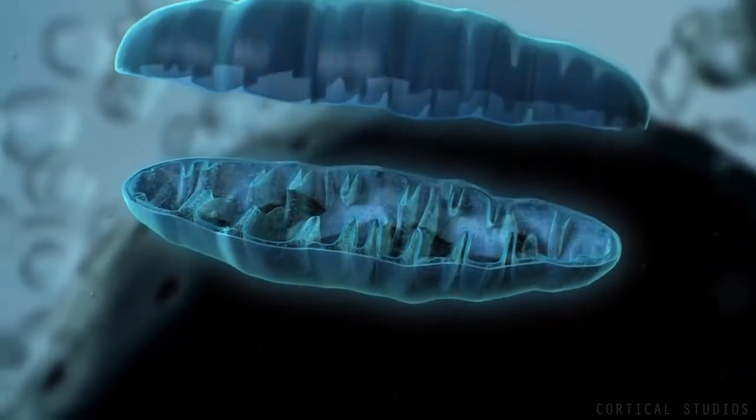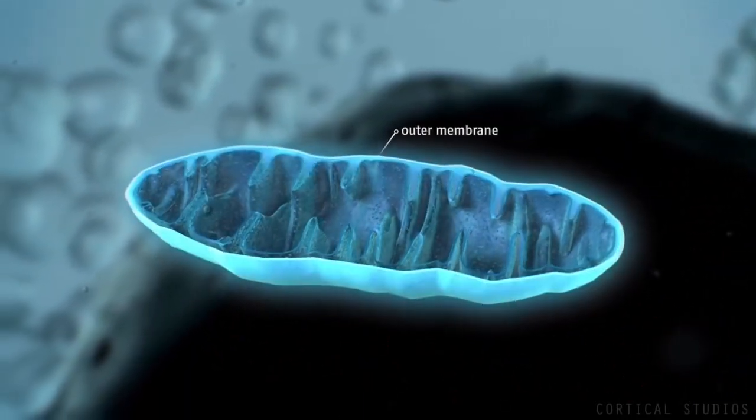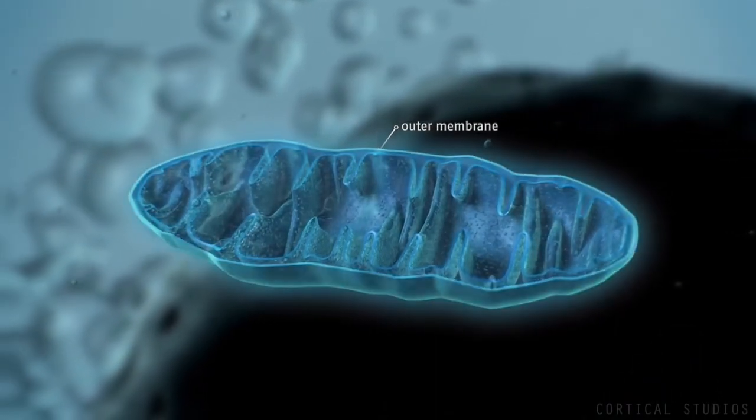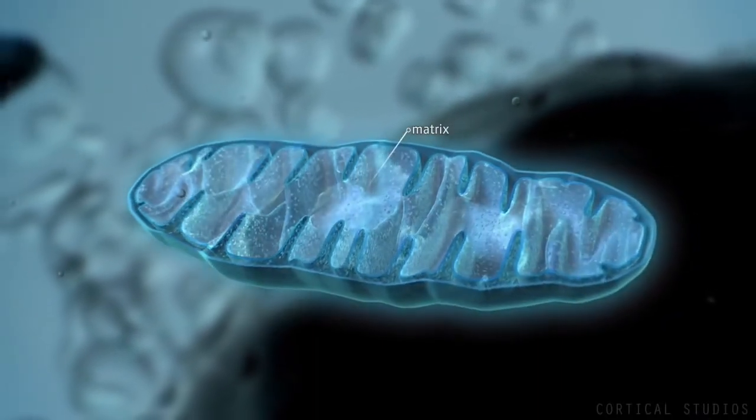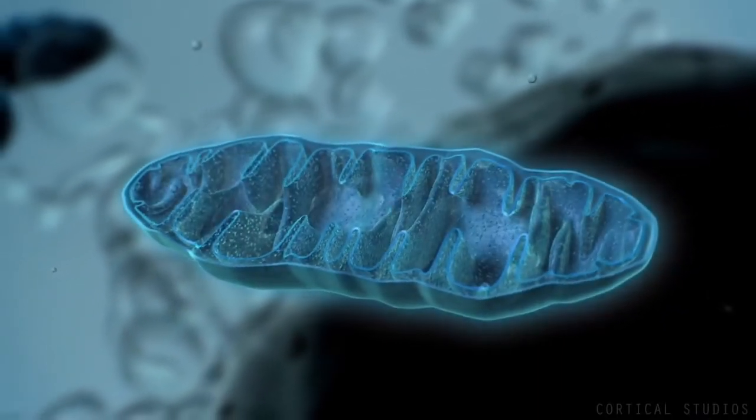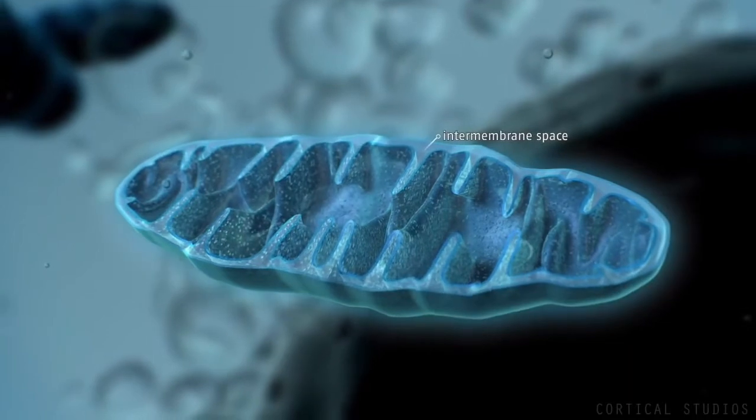Mitochondria consist of two membranes, an outer membrane separating it from the cytosol, and an inner membrane surrounding the so-called matrix. The area between these membranes is called the intermembrane space.